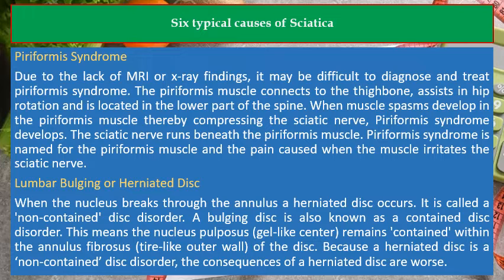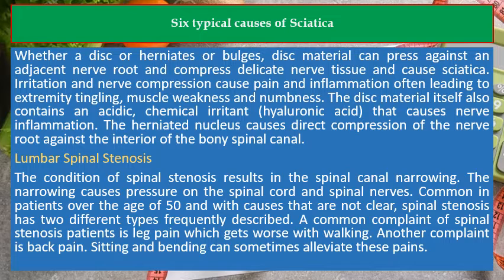Lumbar bulging or herniated disc. When the nucleus breaks through the annulus, a herniated disc occurs — it is called a non-contained disc disorder. A bulging disc is a contained disc disorder, meaning the nucleus pulposus, the gel-like center, remains contained within the annulus fibrosis, the tire-like outer wall of the disc. Because a herniated disc is non-contained, its consequences are worse. Disc material compresses against an adjacent nerve root, causing sciatica. Irritation and nerve compression cause pain and inflammation, often leading to extremity tingling, muscle weakness, and numbness.